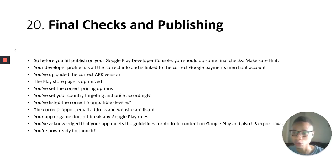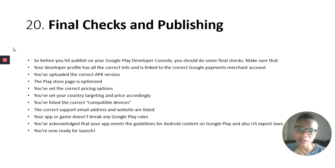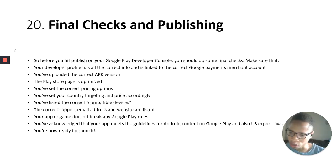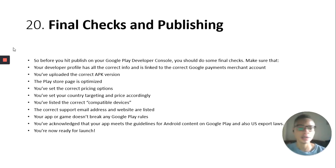Final checks and publication. Before hitting publish on the developer console, do some final checks: make sure your developer profile has the correct info and is linked to the correct Google Payments merchant account; you've uploaded the correct APK version; the Play Store page is optimized; you've set the correct pricing options and country targeting; you've listed the correct compatible devices and support email; and your app doesn't break any Google Play rules or guidelines. Once these final checks are done, you can head over and click publish.